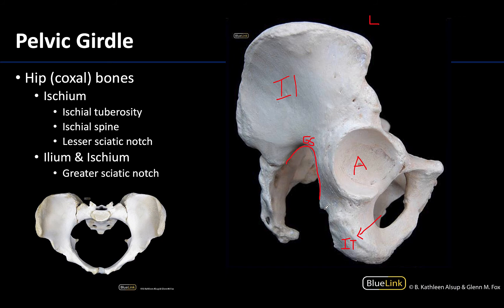The greater sciatic notch ends inferiorly at a region called the ischial spine. The ischial spine is an important pelvic landmark and you can actually see these pretty clearly when looking at the superior view of the pelvic girdle — here is an ischial spine, and here is an ischial spine on the other side. You can see how far they project medially toward that pelvic viscera. These ischial spines can be palpated through the vagina, which can be important in a pudendal nerve block.